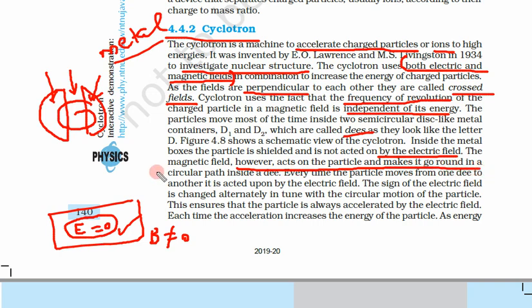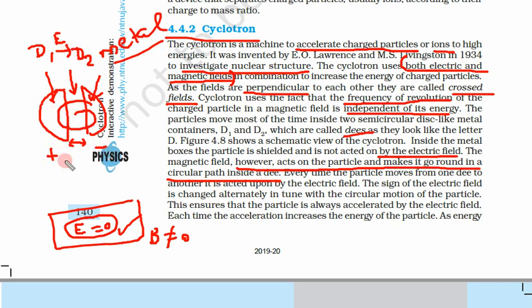The magnetic field makes the particle move in a circular path. The electric field is not inside the D's — every time the particle moves from one D to another, it is acted upon by the electric field. There is a very small gap, so when the particle changes D — say from D1 to D2 — only then it feels an electric field, because one D is positive and the other is negative. The sign of the electric field changes alternatively in tune with the circular motion of the particle.